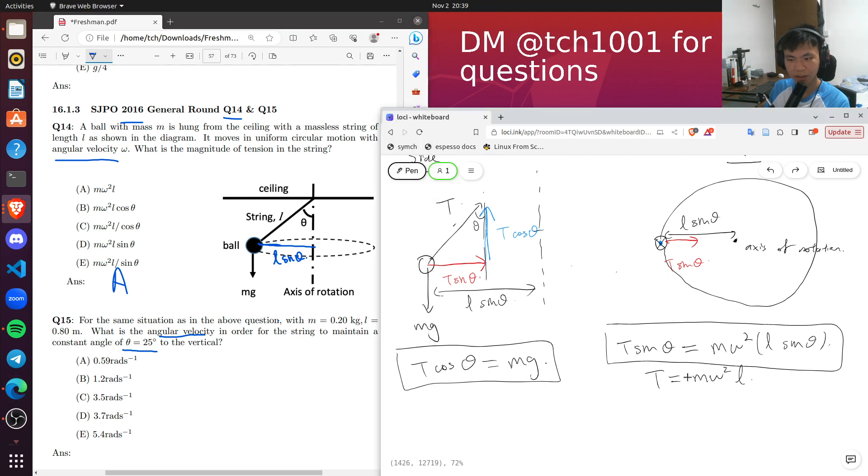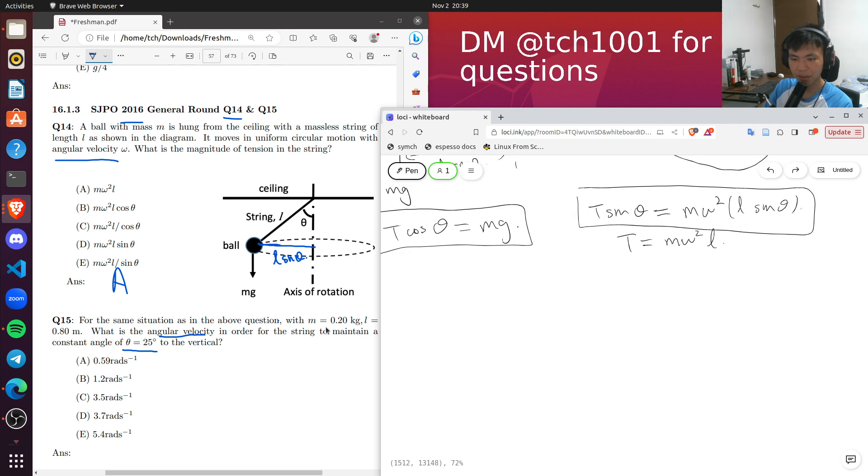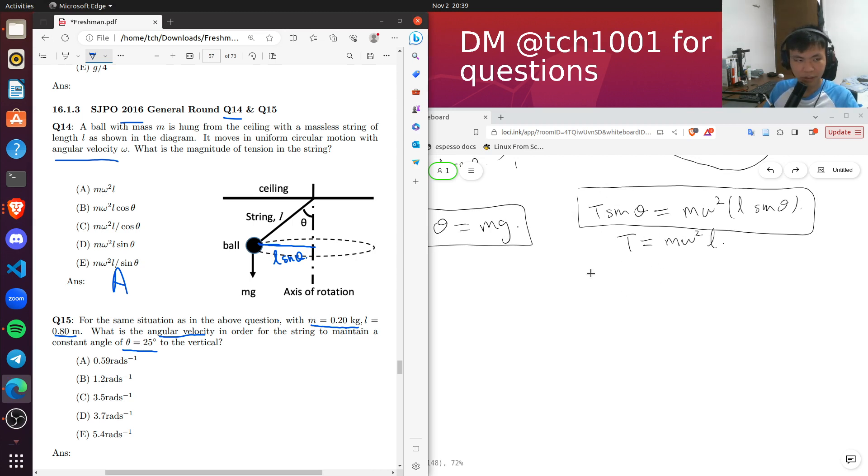So basically, all we need to do is substitute in the values of m equals to 0.20, l equals to 0.8, and theta equals to 25 into the equations we have.